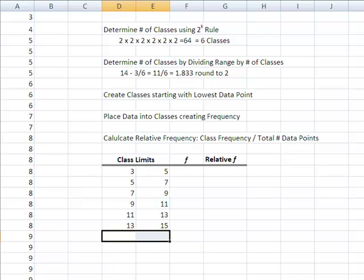Now I've got to start putting my data into the classes to creating their frequency. I can simply add it up. Since my data is sorted, it's kind of easy. I know that for the class between 3 and up to 5, I'm just going to have two data points, 3 and 4.